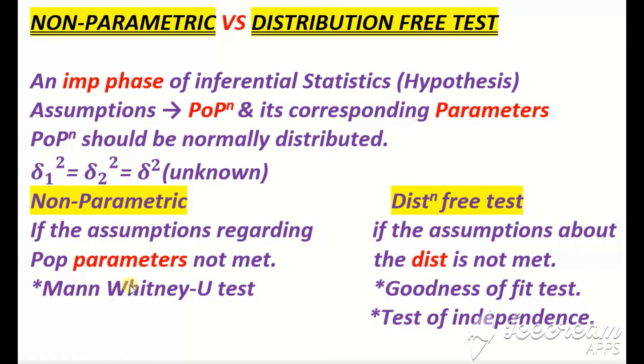Because the normal assumption is not met here, and the population variances being equal and unknown assumptions are also not met here. Now in distribution free test, if the assumption about the distribution is not met. When we do hypothesis testing, first we take assumptions about the population distribution. Now when we do goodness of fit test, in goodness of fit test we don't take any kind of distribution assumptions about the population.